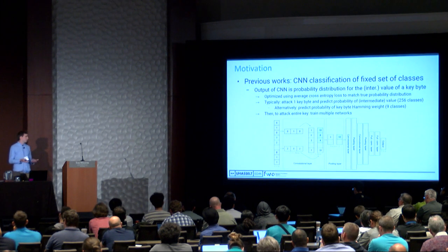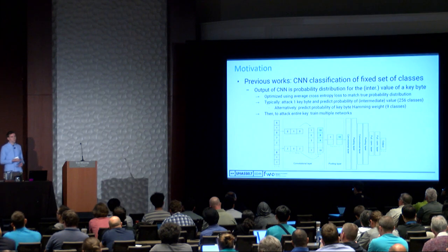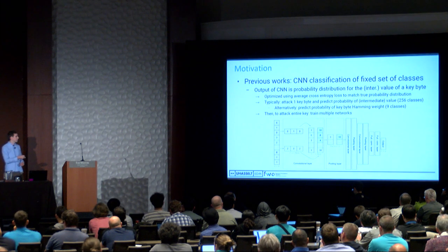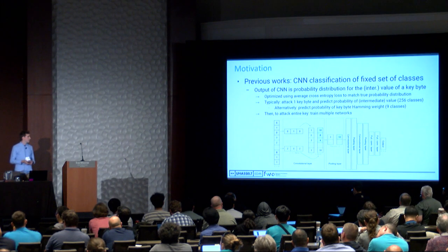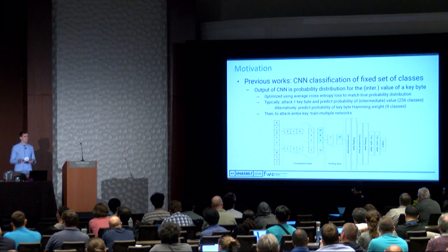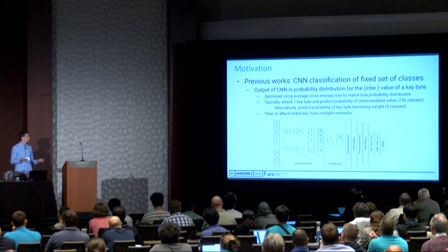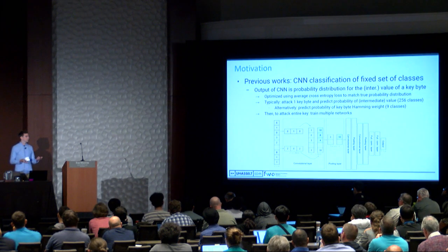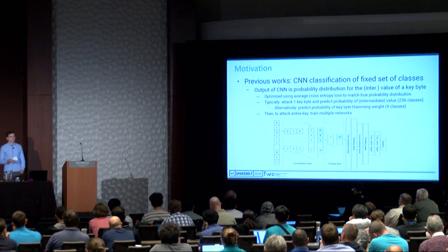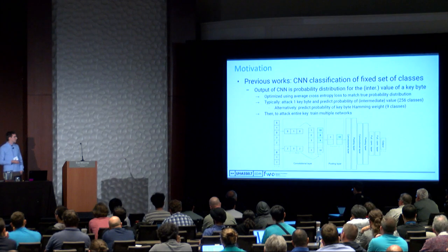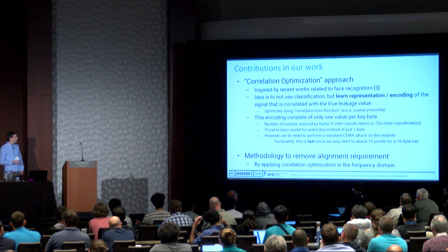Alternatively, we can try to predict the Hamming weight instead, in which case we have only nine classes. To attack the entire key rather than one byte, you can train multiple convolutional neural networks to attack each byte—the first byte, the second byte, and so on—or you can multiply the number of outputs by 16 to give a prediction for all keys simultaneously. Those are all possibilities.